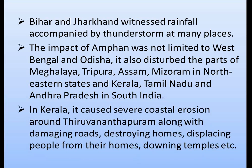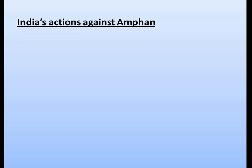In Kerala, Amphan caused severe coastal erosion around Thiruvananthapuram, along with damaging roads, destroying homes, displacing people, and downing trees. So the impact was not only in West Bengal and Odisha. Now let's look at what actions India took against Amphan.